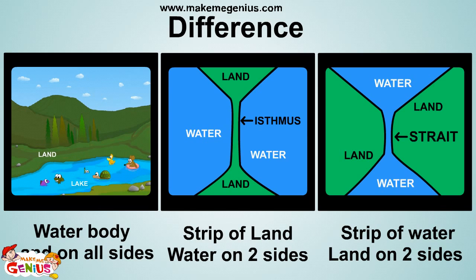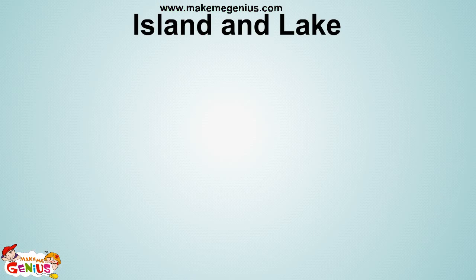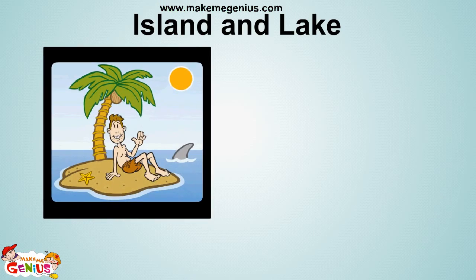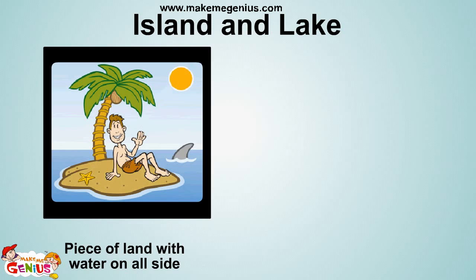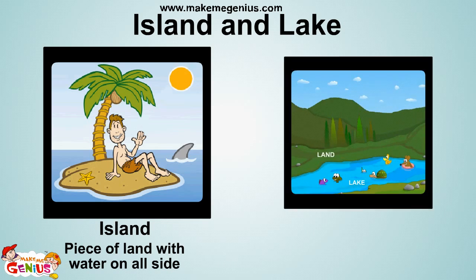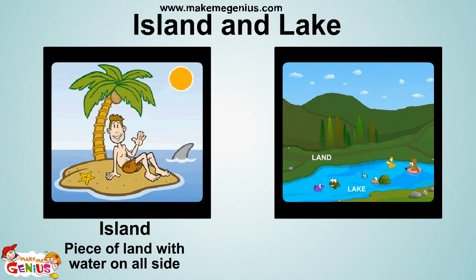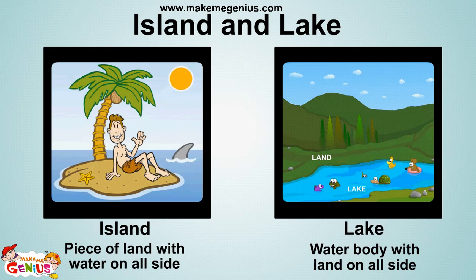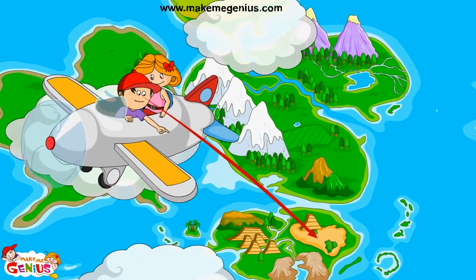Can you tell me what this is? This is a piece of land surrounded by water from all sides. It is called an island. It is just the opposite of a lake. A lake is a water body with land on all sides, and an island is a piece of land with water all around it. It is very interesting. I have learnt a lot about water bodies.